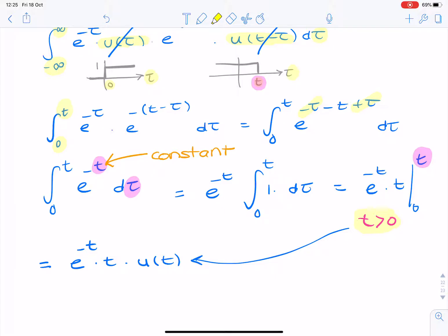Now, we have this product, t u of t, which we can leave inside the answer or we could write it as a ramp function. So, either response is okay. So, you could use the ramp function or you could say t times a unit step. So, that's your final answer.